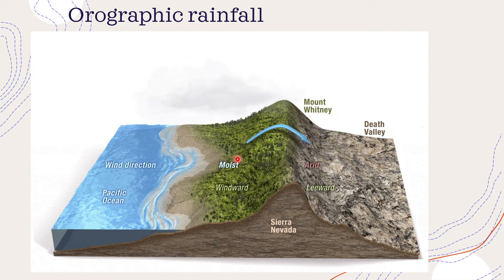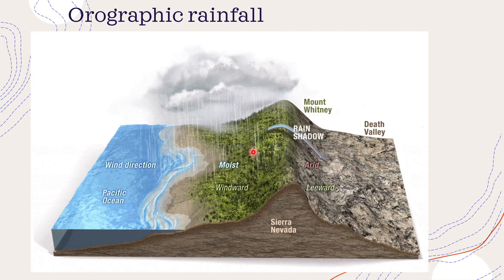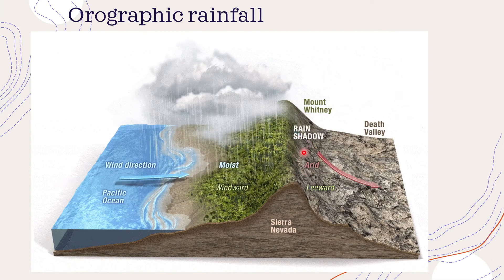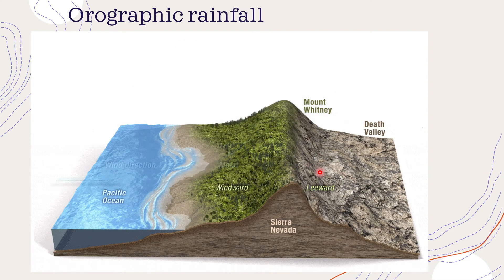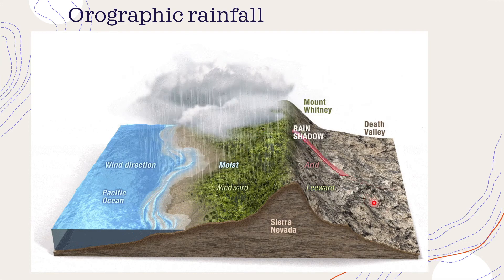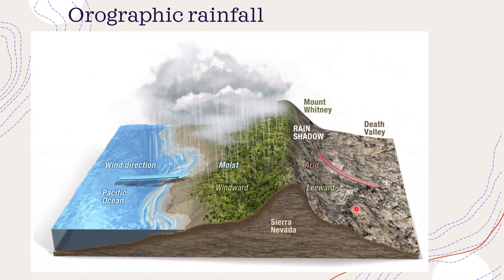When the winds cross the mountain barrier they have very little moisture left. Thus the leeward side of the barrier receives a very low amount of rainfall. It leads to a rain shadow area — a relatively dry area on the leeward side of the mountain.